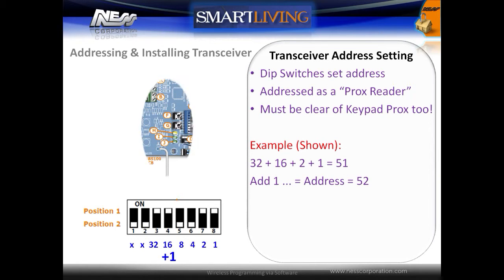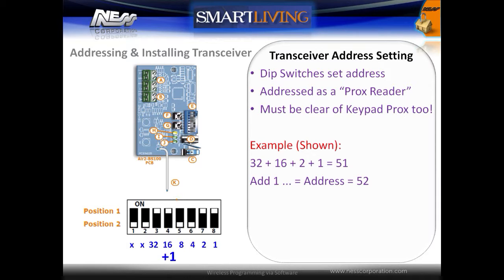The transceiver is addressed using the onboard DIP switches. When addressing the transceiver, care must be taken to make sure it does not conflict with prox readers on the system. Switches 8 to 3 correspond with binary digits. With all switches off and a value of 0, this corresponds with module number 1 on the system, which means we always need to add 1 to the total number of the DIP switches.